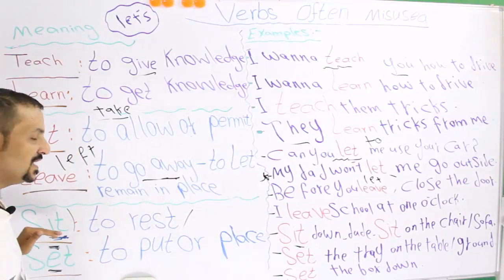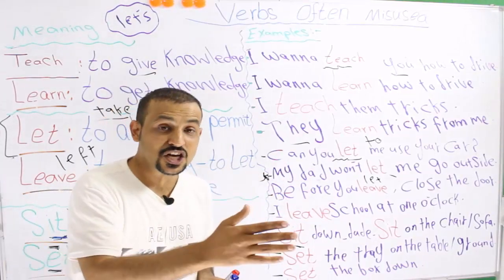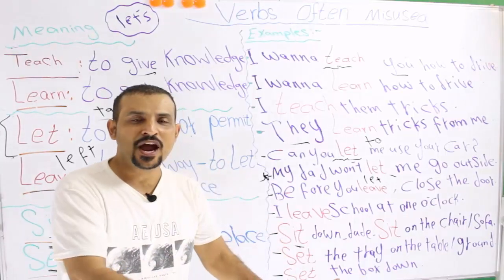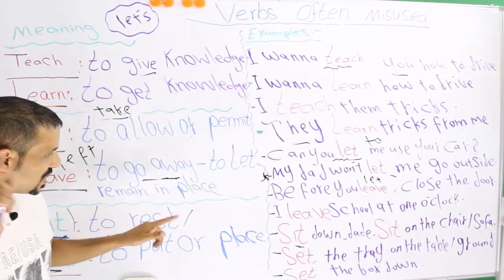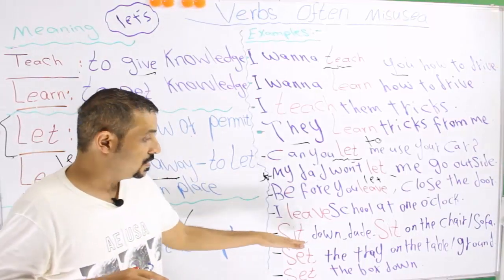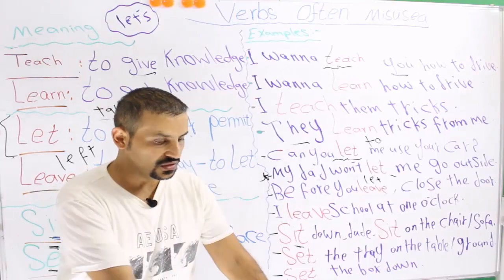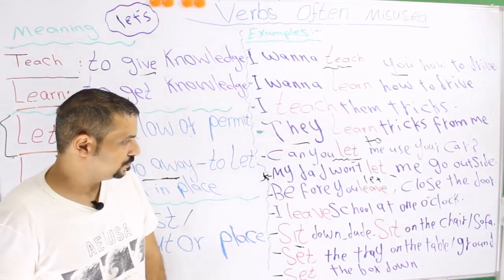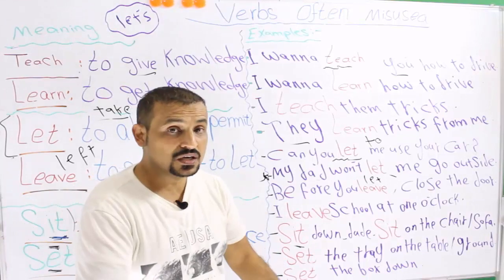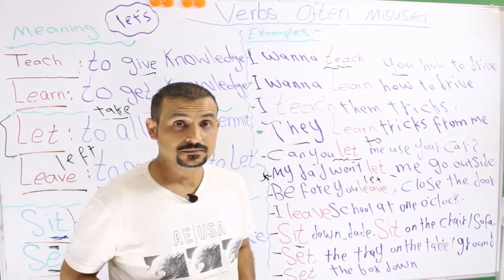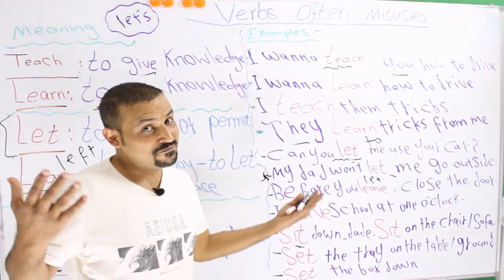Sit means to rest this body part — your bottom — somewhere. It could be on a chair, on the sofa, on the ground. Think of it as resting your bottom somewhere. For example: 'Sit down' means rest your bottom down. 'Sit on the chair or sofa' means rest your bottom on the chair or sofa.